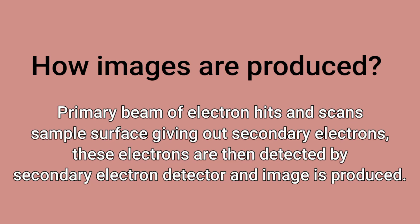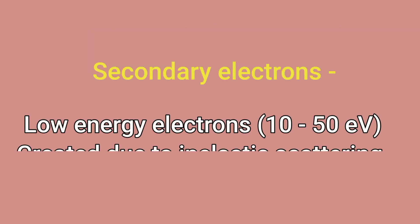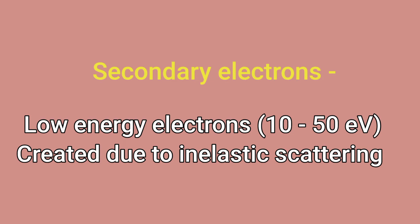How do secondary electrons differ from backscattered electrons? Secondary electrons are considered low energy electrons, having energy in the range of 10 to 50 electron volts, and they are created due to inelastic scattering of electrons. Secondary electrons give valuable information about the topography of the sample.